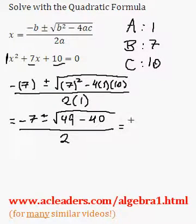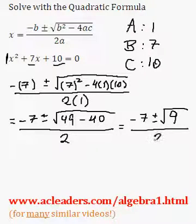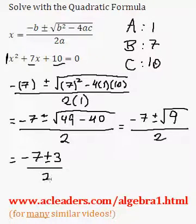Then over here we get negative 7 plus or minus the root of 49 minus 40, which is just 9, over 2. So negative 7 plus or minus 3, because of course that's the root of 9, over 2.